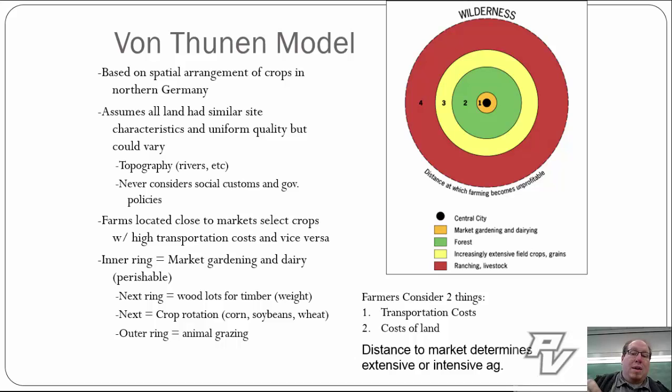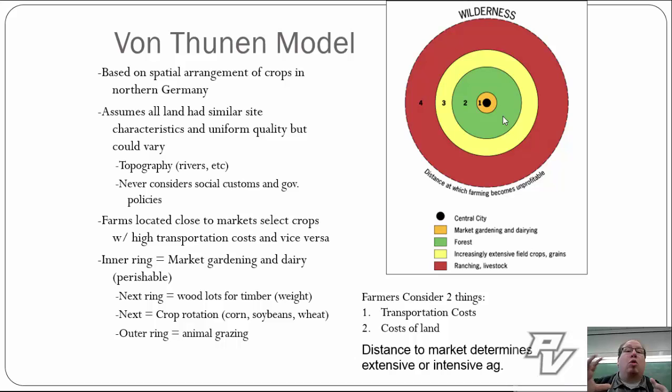The next region out is forest. Why? First of all, you need wood to build just about everything you want to build, and wood is not light — it's not something you can easily transport, so it needs to be closer. The third ring is what we call increasingly extensive field crops and grains — that's your wheat, corn, soy, all those basic cereal crops. And then the furthest out, the easiest thing to transport, is our ranching and livestock.